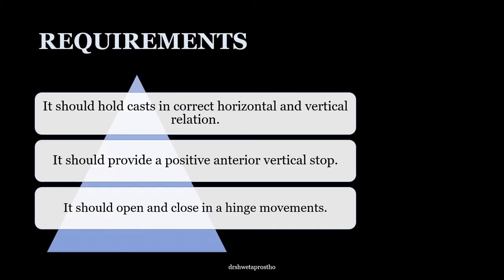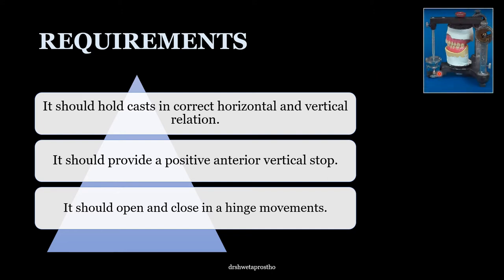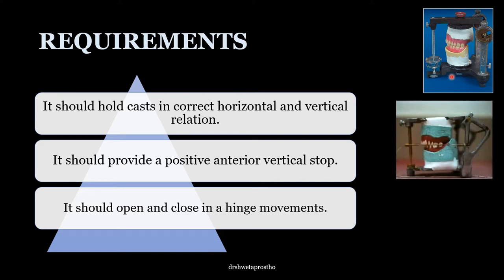What should be the basic requirements of the articulator? It should hold the cast in correct horizontal and vertical relation. The upper and lower casts are attached to the upper and lower members in the correct horizontal relation — that is the centric relation — and vertical relation — that is the vertical dimension at occlusion — as recorded from the patient. Second, it provides a positive anterior vertical stop. This vertical pin provides the vertical stop and maintains the height of the upper and lower rims as recorded by the patient.